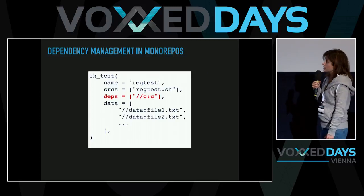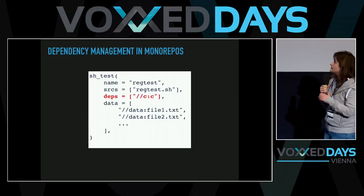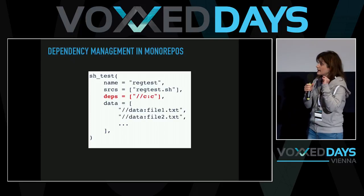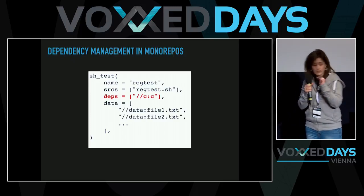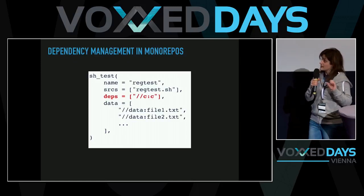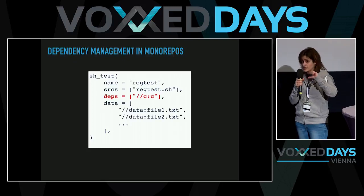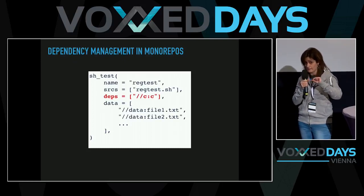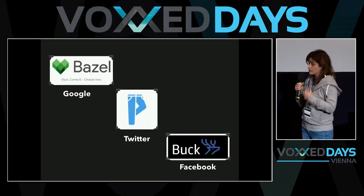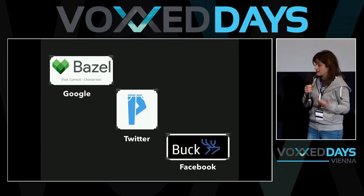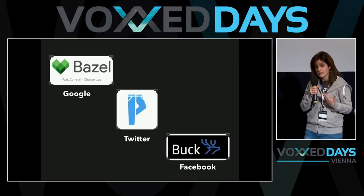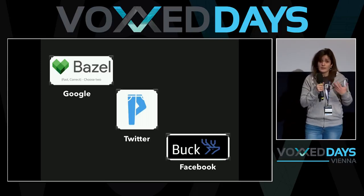However, this is not the only solution. For monorepos there are tools that allow us to define which source code pieces are related to a specific test. This is a fragment from Bazel, a tool created by Google, where dependencies between tests and sources are explicit because developers write them. Twitter and Facebook, since they work with monorepos, have also created their own tools to filter or enable incremental builds.